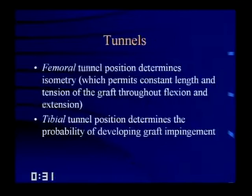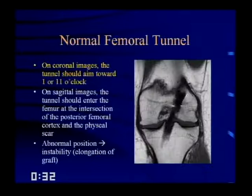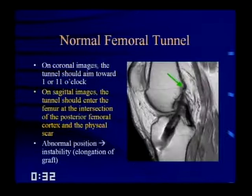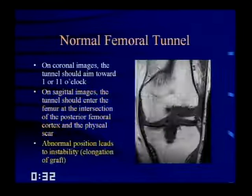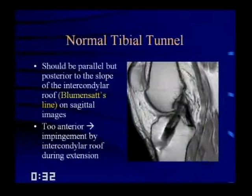Regarding tunnels: the femoral tunnel position determines isometry, which permits constant length and tension of the graft throughout flexion and extension — essentially determining graft stability. The tibial tunnel position determines the probability of graft impingement. The normal femoral tunnel on coronal images should aim toward 1 or 11 o'clock depending on which knee. On sagittal images, the tunnel should enter the femur at the junction of the posterior femoral cortex and the physeal scar. Abnormal position leads to instability and elongation of the graft.